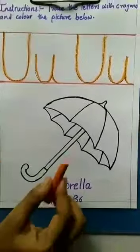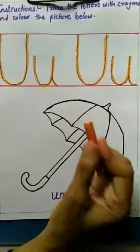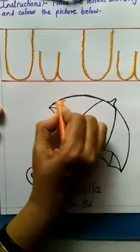Now, we will color the umbrella. U for umbrella. So, take the crayon and start coloring with me.